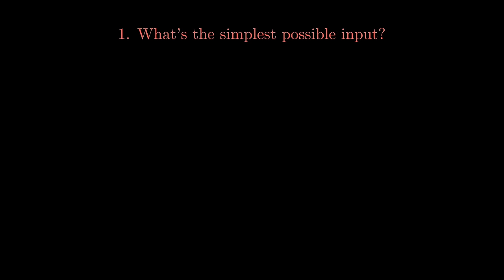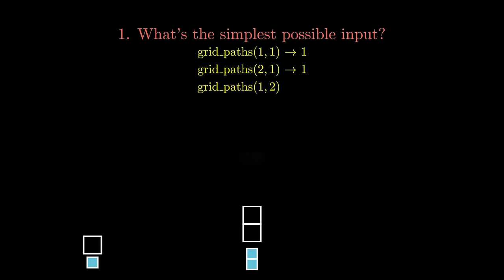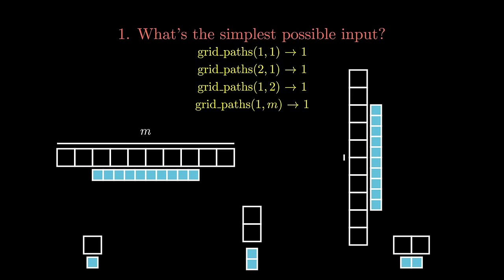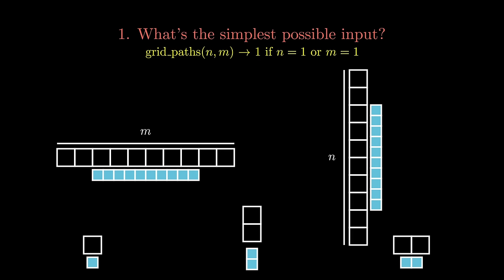Let's play around with some simple inputs and see what happens. The simplest possible reasonable input to this function is a 1 by 1 grid where we end up with exactly one path. If we take a second to try some other simple inputs, you might notice something interesting. We can actually make a fairly comprehensive base case by noticing that if either one of these dimensions is going to be one, we have only one unique path. This can be written quite concisely as the following base case. Often with base cases you want to find a way to be as comprehensive as possible — don't be afraid to adapt, and it's completely normal to come back later and modify the base case.